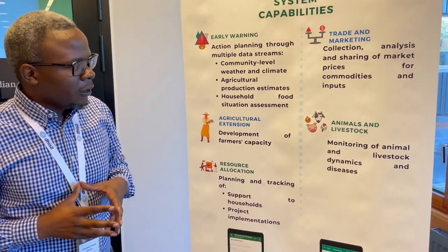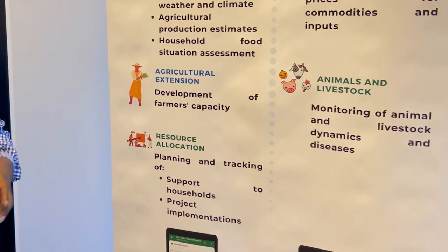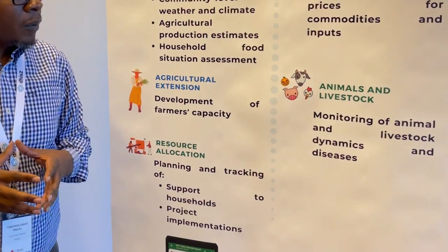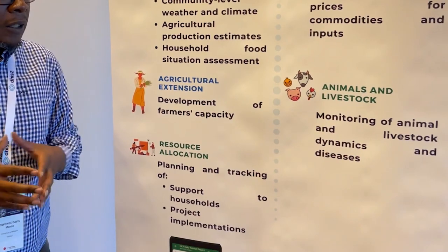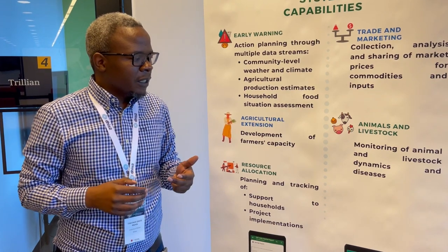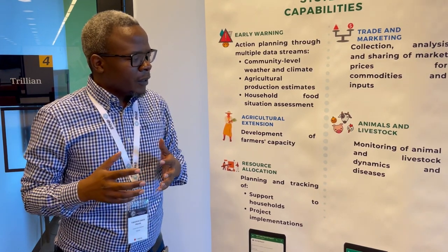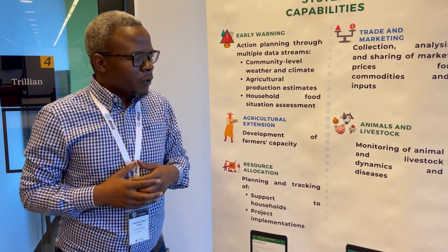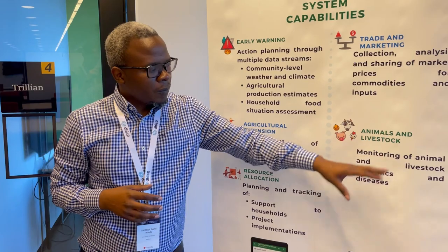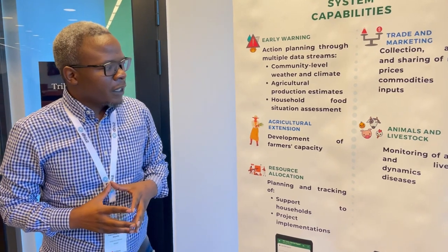Another key component within the NAMIS platform is the livestock component. There are different tools for monitoring livestock dynamics and other animals. You look at things like births, deaths, transfers in, transfers out, and animals stolen. For other animals, you can also look at vaccination status. All of that comes under this component on animals and livestock, and there is an extensive number of forms that supports it.